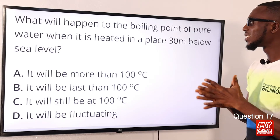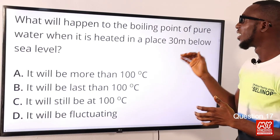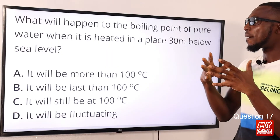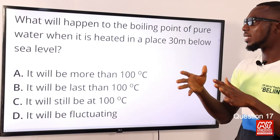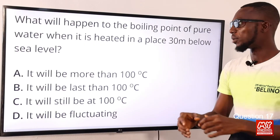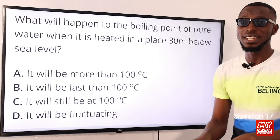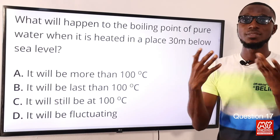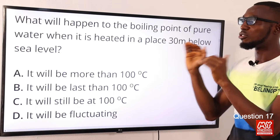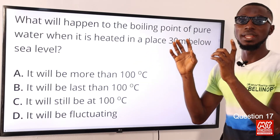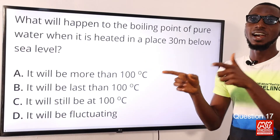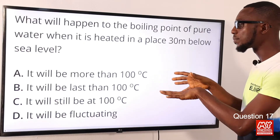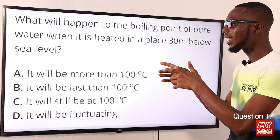Question 17: What will happen to the boiling point of pure water when heated at a place 30 meters below sea level? Pure water has no impurities. Pressure in a liquid increases in direct proportion to depth. Going deeper means increased pressure, and increased pressure increases the boiling point. Normally the boiling point of water is 100°C, so with increased pressure, it will be more than that. Therefore, option A is the correct option.